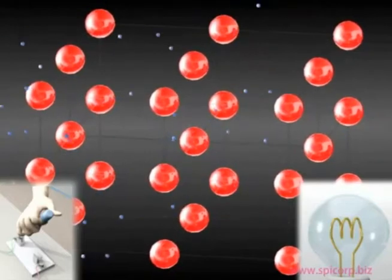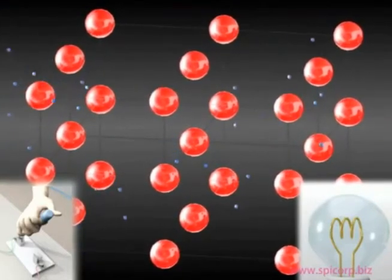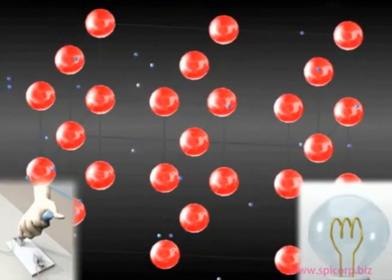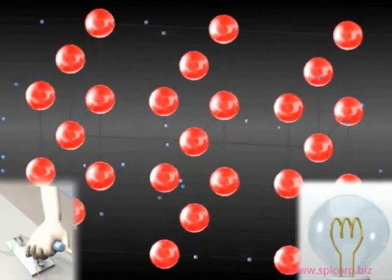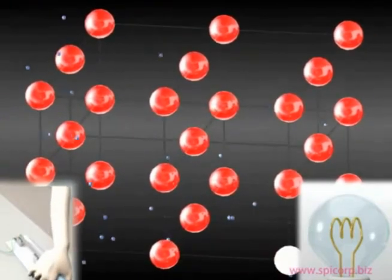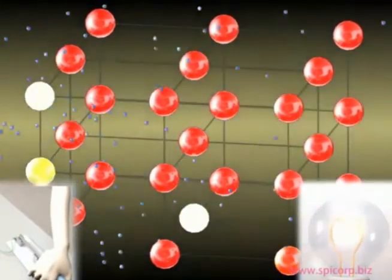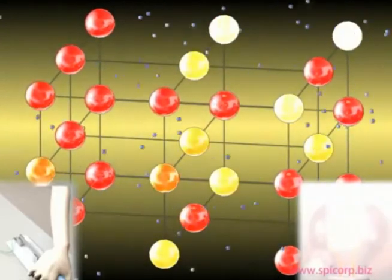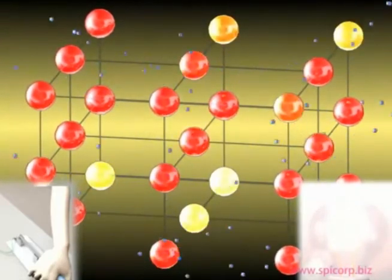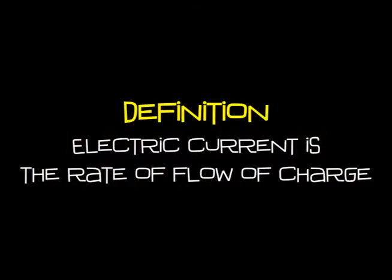You can see this happening clearly in the animation. When the switch is closed, the free electrons all start to move in the same direction. The definition of an electric current is: electric current is the rate of flow of charge. That's something you need to learn off by heart.